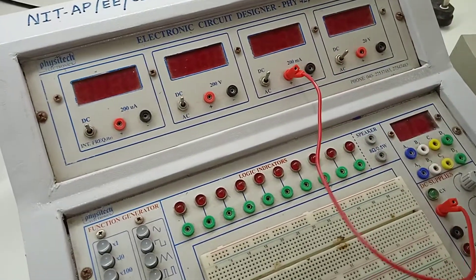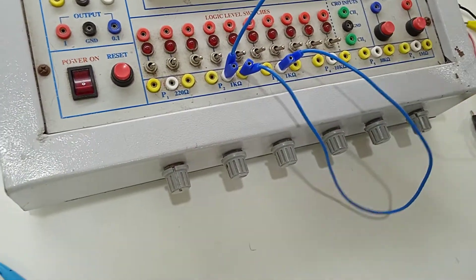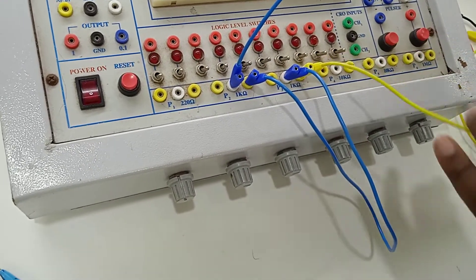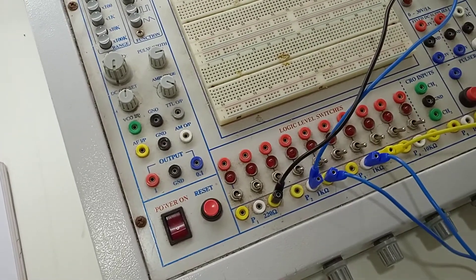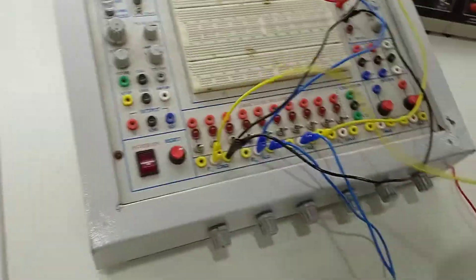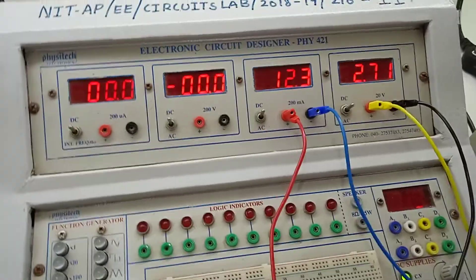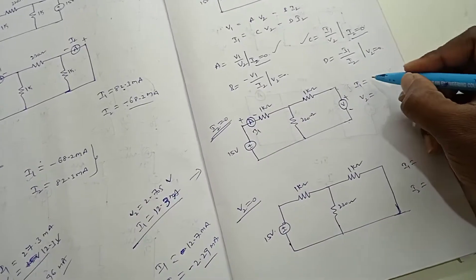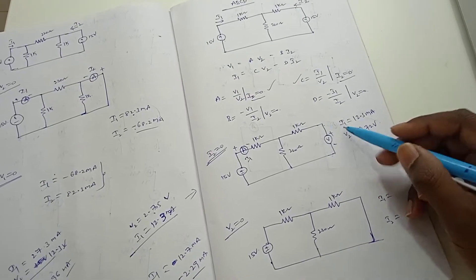The 15 volts positive is given to the ammeter positive. The ammeter negative is given to the first one kilo-ohm terminal; the second one kilo-ohm terminal is given to the voltmeter positive. The voltmeter negative is connected to the 220 ohms second terminal, and 220 ohms first terminal is connected to the second one kilo-ohm junction. After switching on, I1 equals 12.3 milliamperes and V2 equals 2.72 volts, from which we can get A and C.